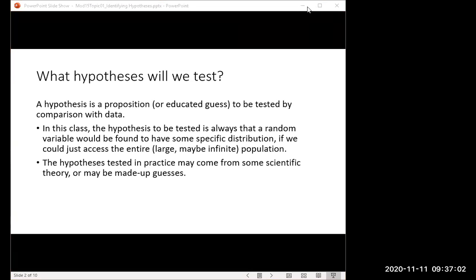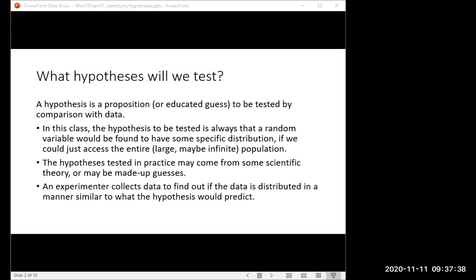Now, where does your hypothesis come from? I mean, I say an educated guess, but it usually comes up from somewhere. It might be a scientific theory. There are lots of hypotheses about distributions of variables in physics and statistical mechanics, or they might just be made-up guesses. It doesn't matter because either way, they're going to be tested against data to see if they're consistent with what we really observe. So an experimenter collects data to find out if the data is distributed in a manner similar to what the hypothesis would predict.